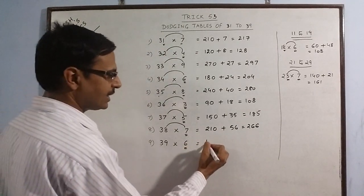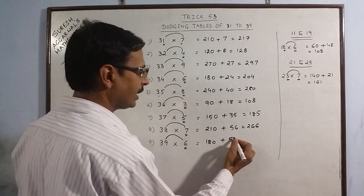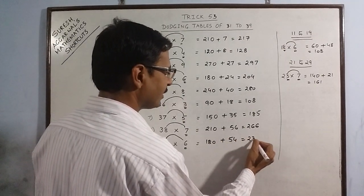39 into 6: triple of 6 is 18, put a 0, 9 sixes are 54, add the two: 234 is the result.